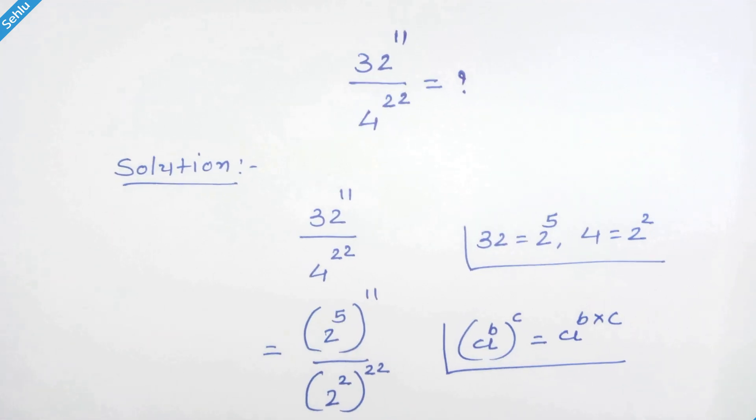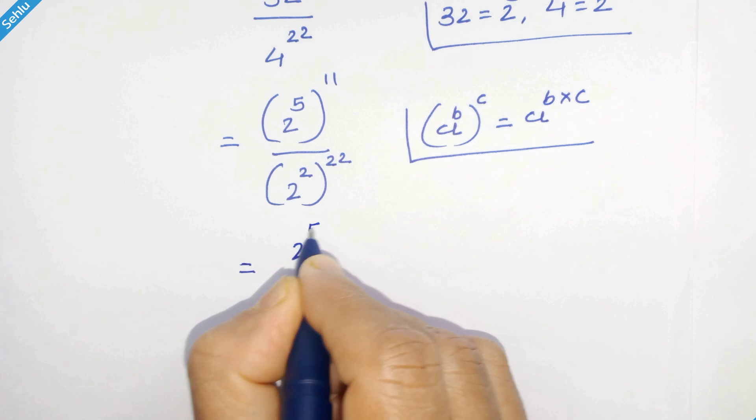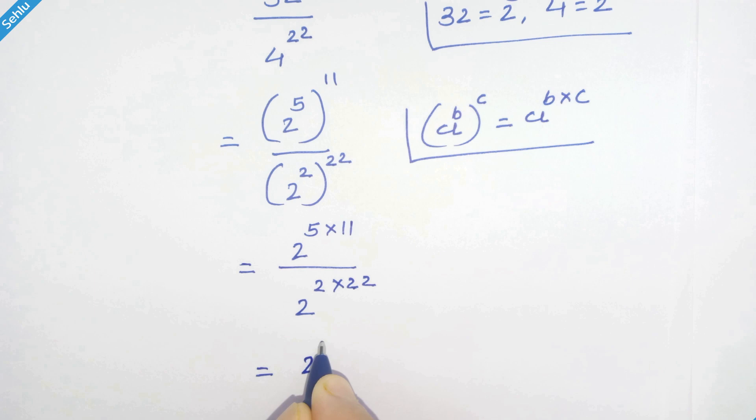So in the next step we have 2 raised to 5 times 11 upon 2 raised to 2 times 22. 5 times 11 is 55, so we have 2 raised to 55, and 2 times 22 is 44,